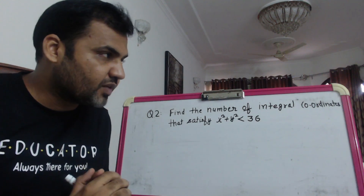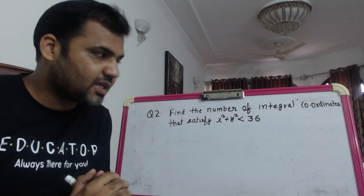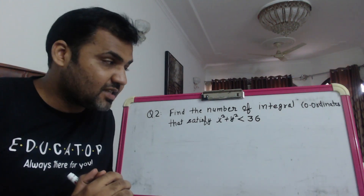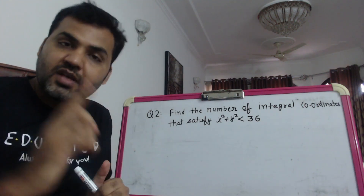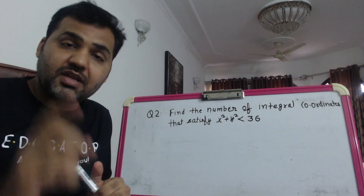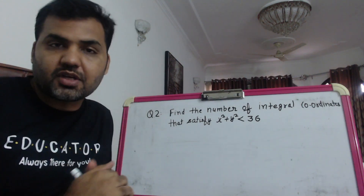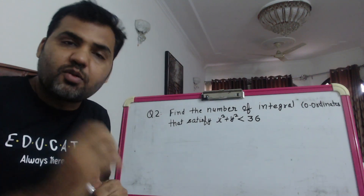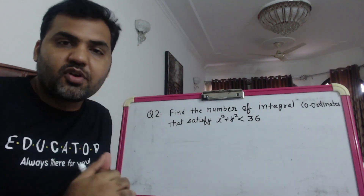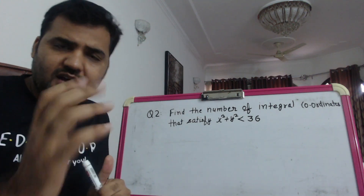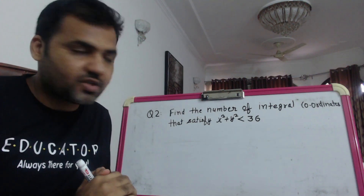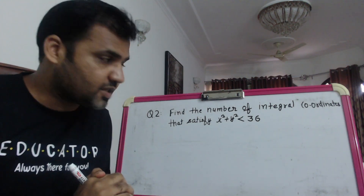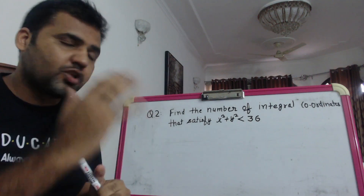Look at question number two here. The question is: find the number of integral coordinates that satisfy x² + y² < 36. This is a very important question - a similar question appeared in CAT 2016. It's a beautiful question and we'll discuss the right approach.